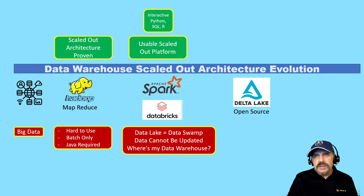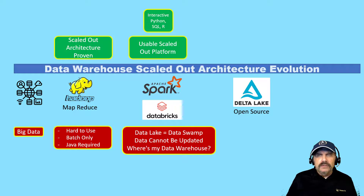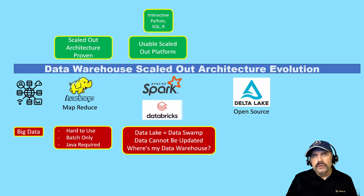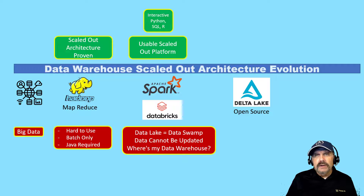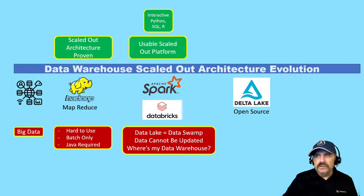People started saying they wanted the functionality of their good old relational data warehouse. That led to Delta Lake. Delta Lake is open source and it gave us CRUD operations and ACID transactions. Basically, what Delta Lake gave us was SQL-like relational tables — we could do joins, merge for updates, inserts, updates, deletes. We had transaction logging and all these great things. So now we have something very much like the good old relational data warehouse, but scaled out.